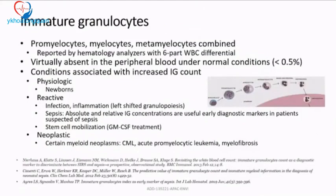Immature granulocytes include promyelocytes, myelocytes, and metamyelocytes. A six-part WBC differential analyzer picks up these cells. They are virtually absent in normal peripheral blood, but physiologically may be seen in newborns due to birth stress. In reactive conditions like infection and inflammation, a left shift occurs, and in sepsis — the extreme of infection — there is an absolute and relative IG elevation, which is an important diagnostic marker.